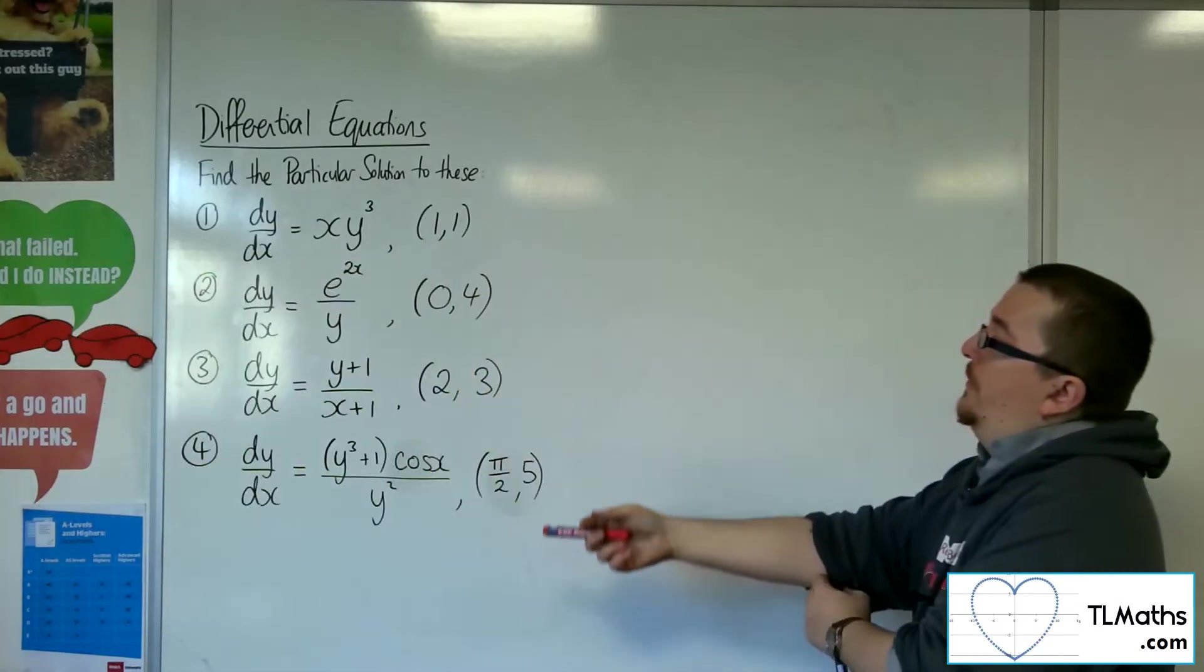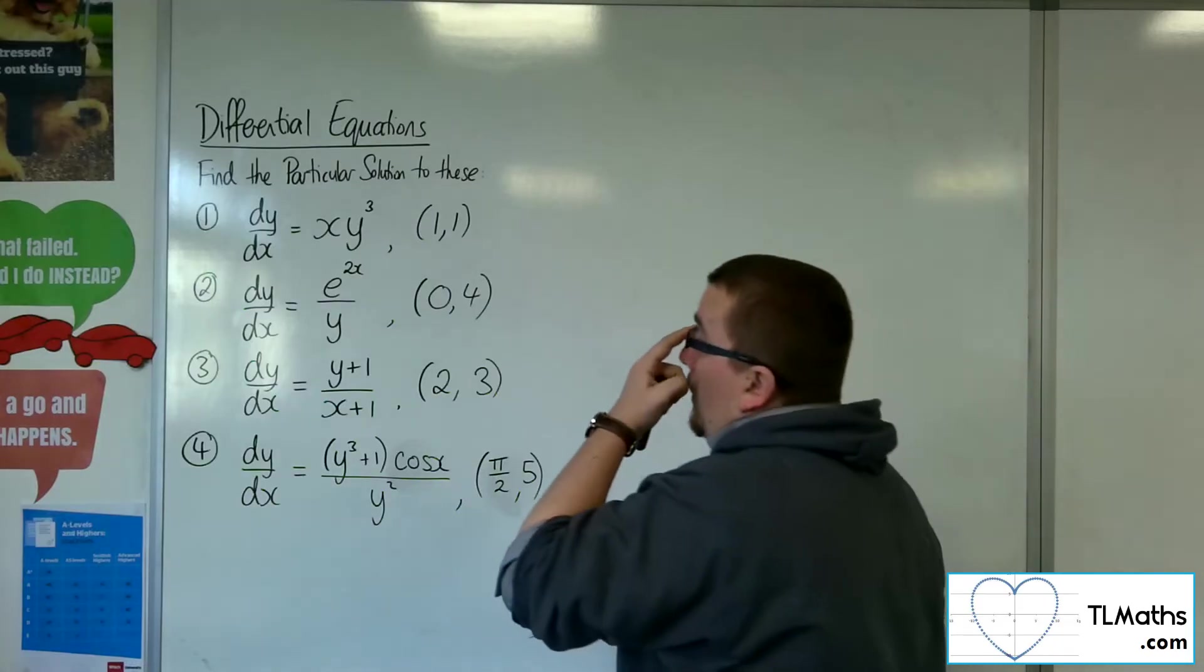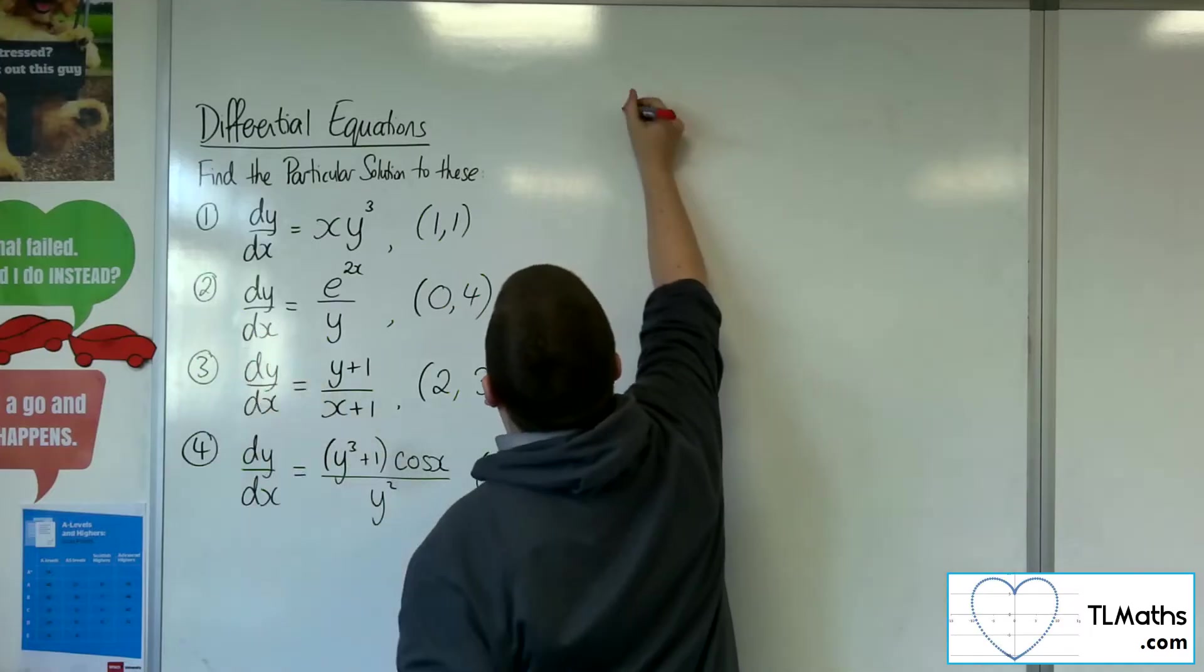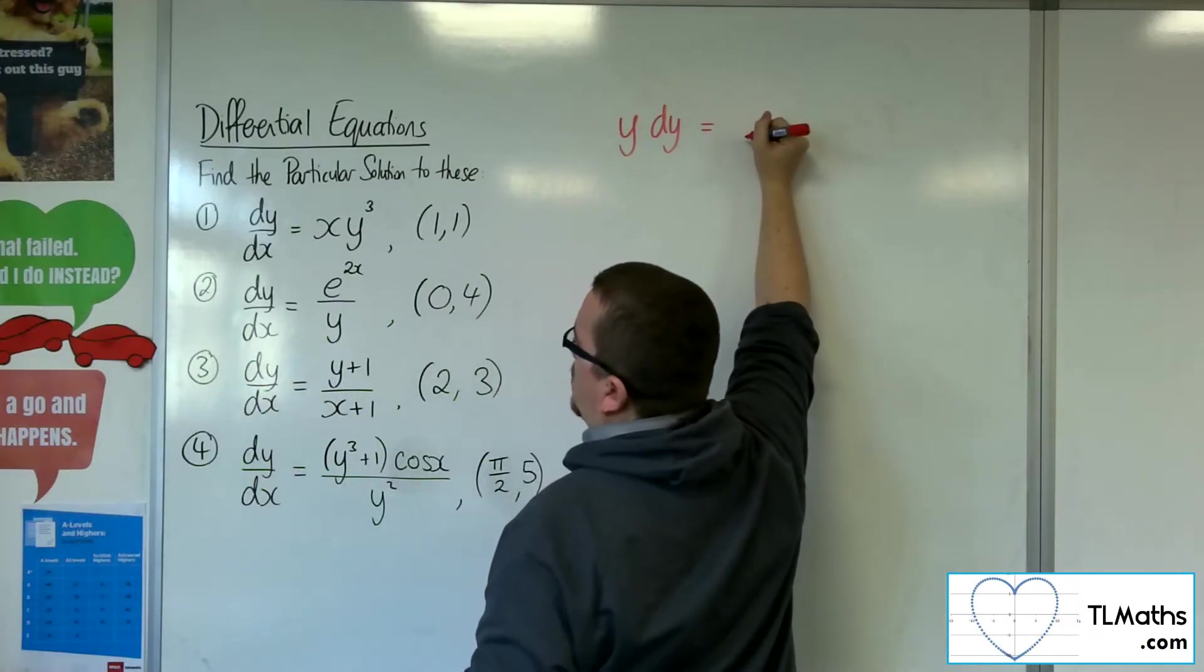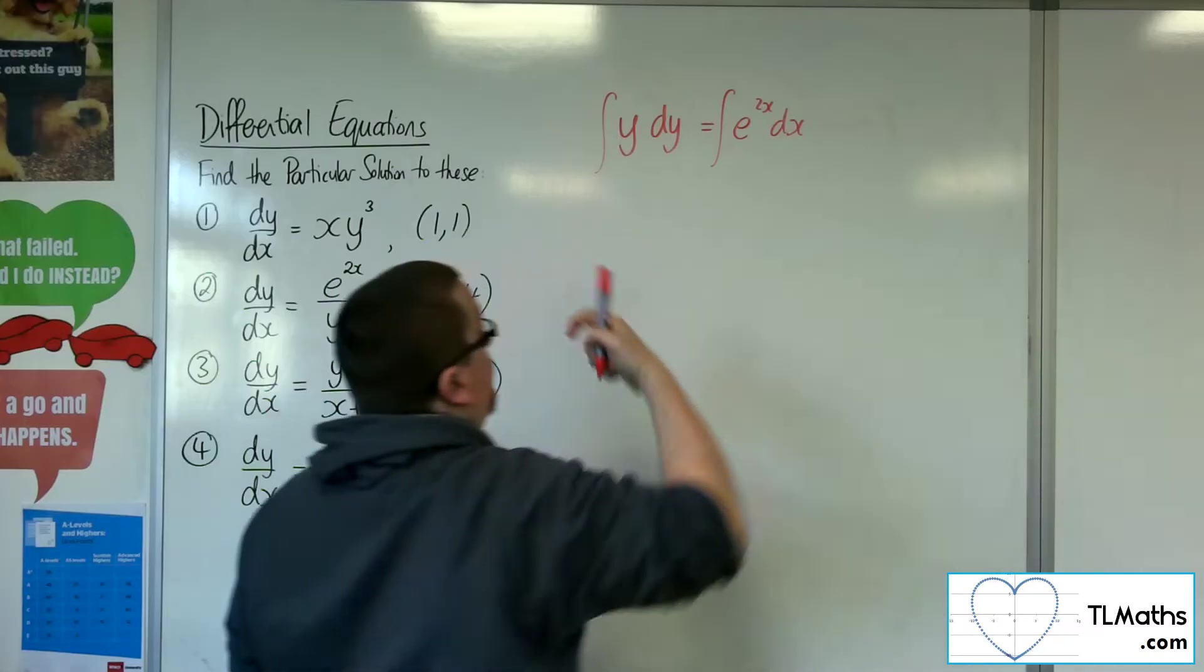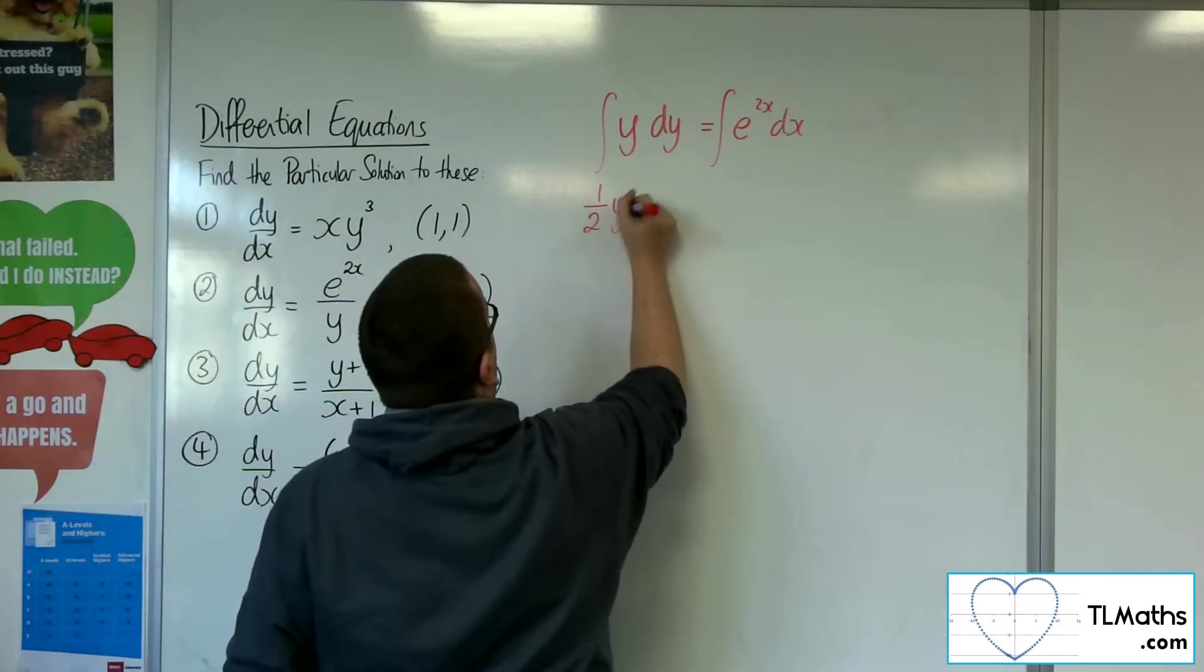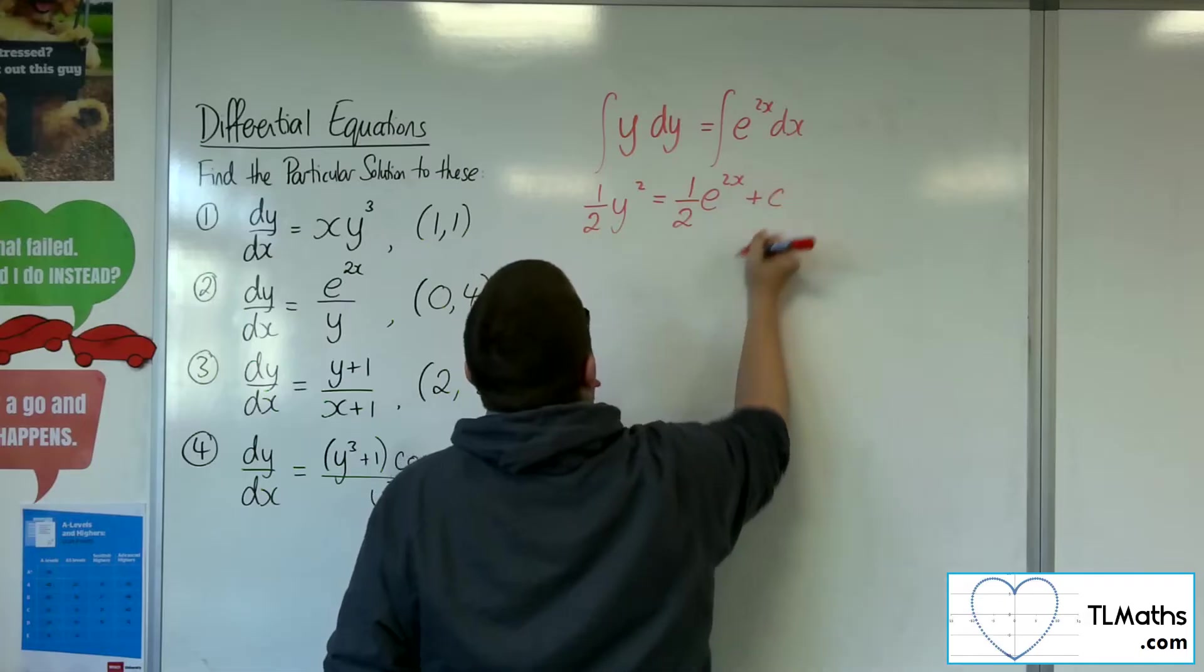Let's have a look at question number 2. dy/dx equals e to the 2x over y. Now to get the y onto the left-hand side, I'd multiply both sides by the y. The dy stays where it is. And then I can multiply both sides by the dx. And then integrate. The y will integrate to 1/2 y squared. And e to the 2x will integrate to 1/2 e to the 2x plus a constant of integration c.